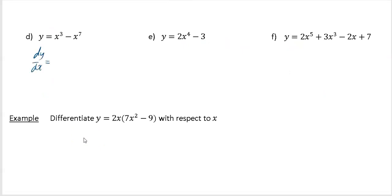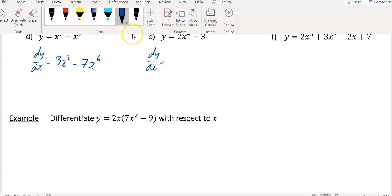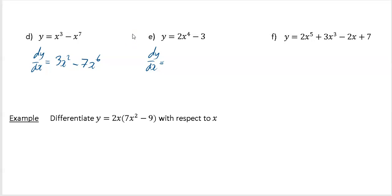Part d just looks more complicated because you've got two terms, but we differentiate term by term. Differentiating x cubed gives 3x squared; differentiating x to the power of seven gives 7x to the power of six — and remember that's minus, so it's minus. Part e: the four comes down and multiplies the two to become 8x cubed; and the constant minus 3 differentiates to zero, so you don't need to write minus zero.